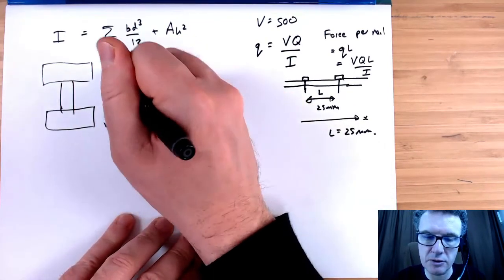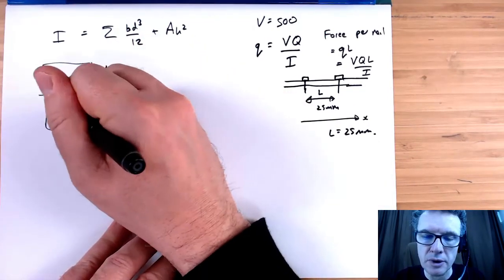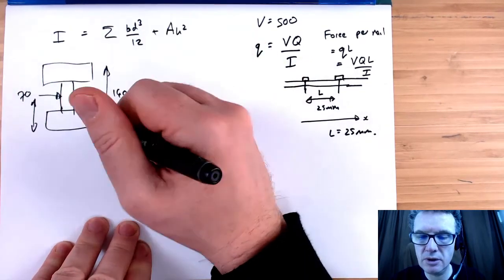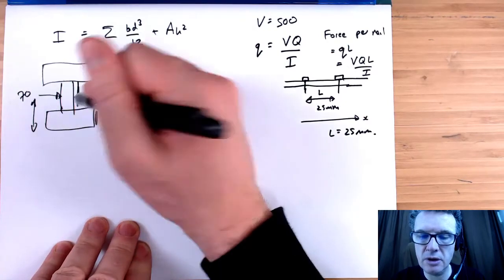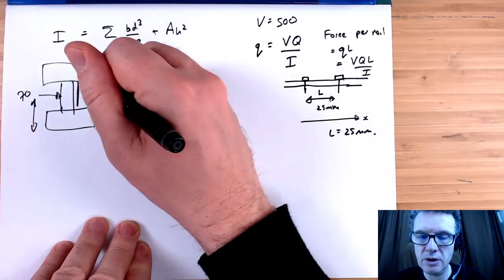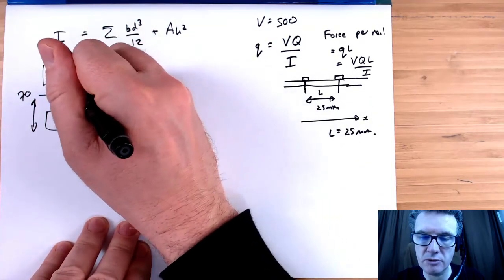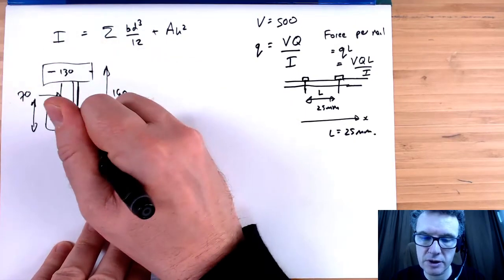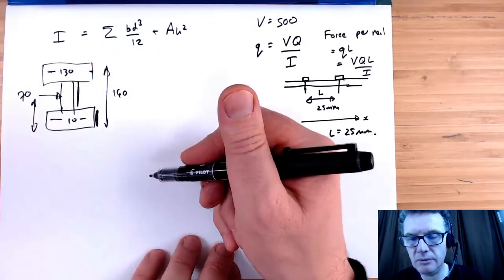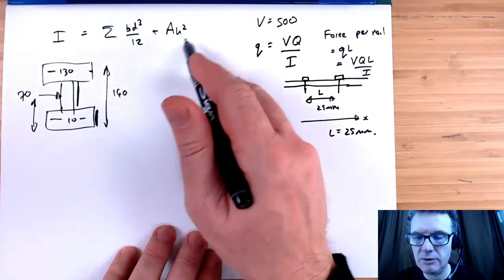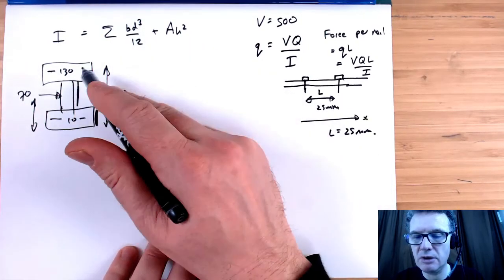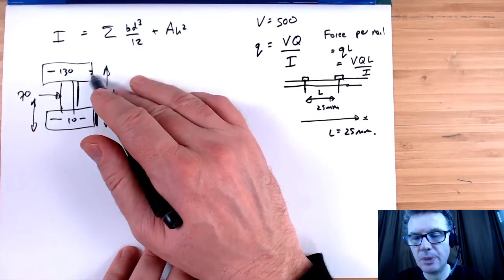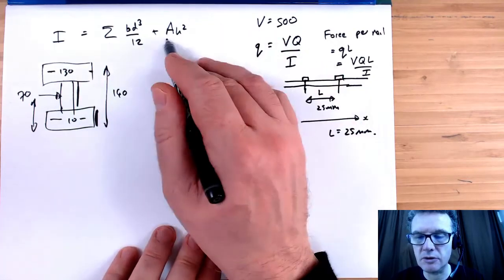Total is 140, nice and symmetric. So the neutral axis is going to be 70. Here we've got 20, 120, and then half this height, so that would be 130 here to get to the center. Here it's just going to be half this height, so that's 10.